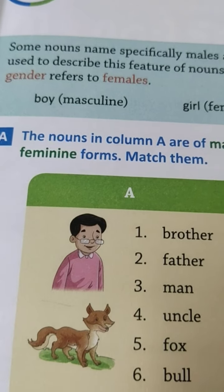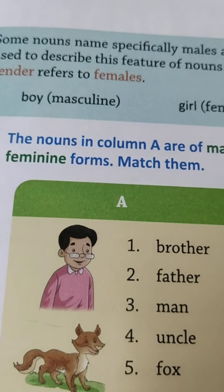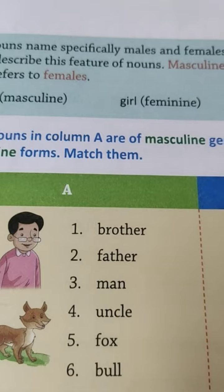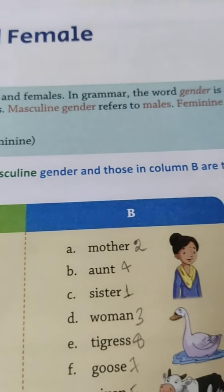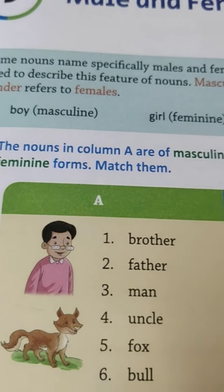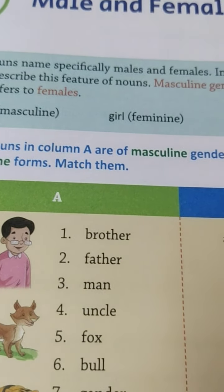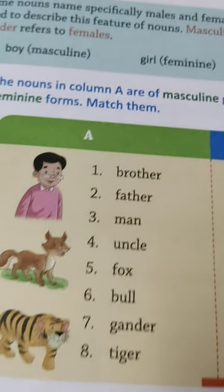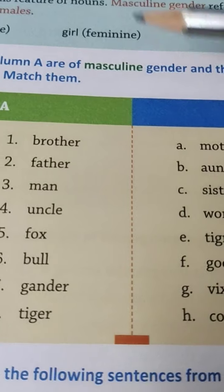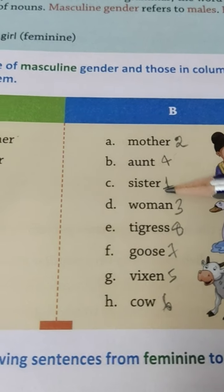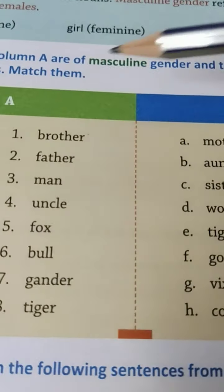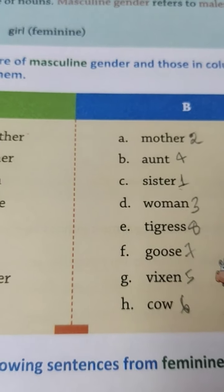Now we will do exercise A. The nouns in column A are of masculine gender and those in column B are their feminine forms. We will match them. Number 1: brother — sister. Number 2: father — mother.